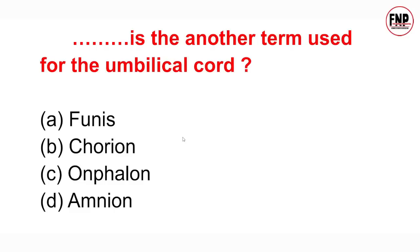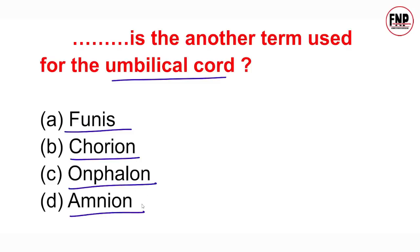Next question: Another term used for umbilical cord — funis, chorion, omphalon, or amnion? Option A is absolutely correct — funis. Umbilical cord jo ki bachche aur placenta ke beech mein ek bridge ya connection ke roop mein kaam karti hai, ise funis bhi kehte hain.